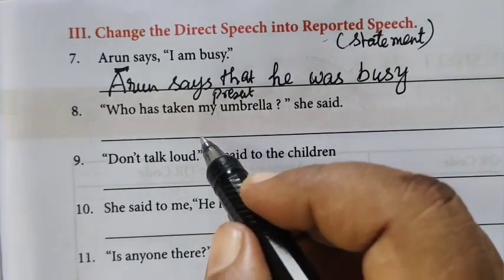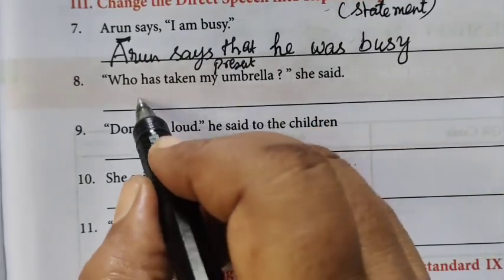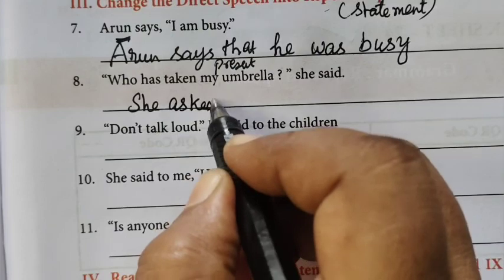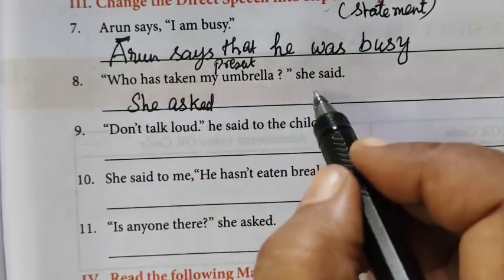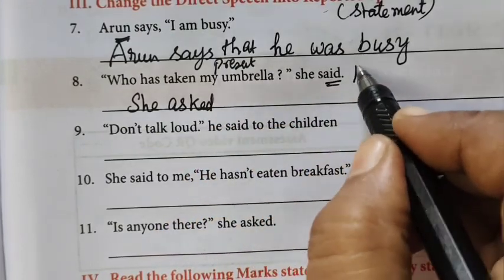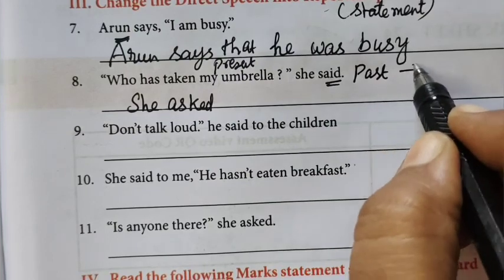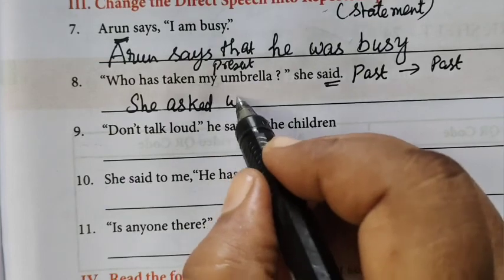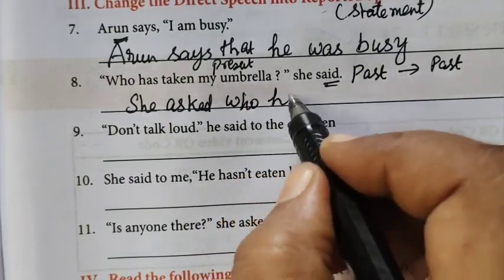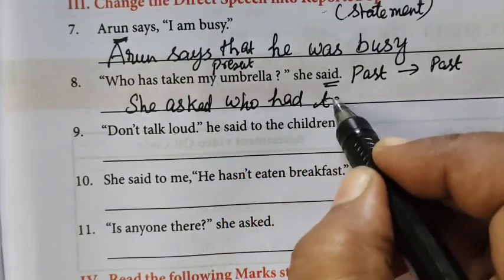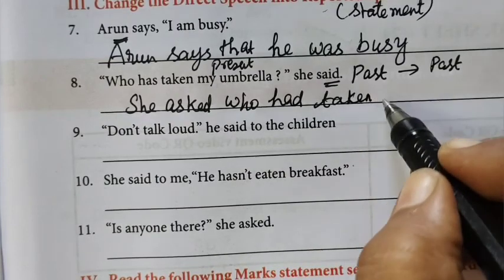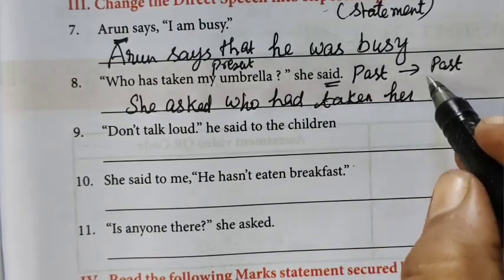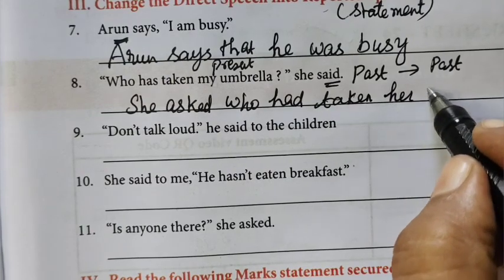'Who has taken my umbrella?' she said. So she asked. This is a question with past tense. When given past tense, we apply past tense conversion. 'Has taken' becomes 'had taken'. She asked who had taken her umbrella.